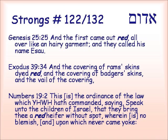Numbers 19.2: 'And this is the ordinance of the law which Yahweh hath commanded, saying, Speak unto the children of Israel, that they bring thee a red heifer without spot, wherein is no blemish, and upon which never came a yoke.' Of course, the rabbis in Israel are waiting for this red heifer to appear again. Sometimes we hear it was found, then we hear it grew a white hair. So at the right time, I'm sure there will be produced this red heifer again.